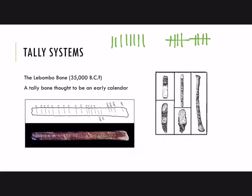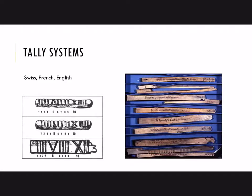An early example of a tally stick is the Labombo bone. One estimate is that it's from 35,000 BC, though that may or may not be accurate depending on the perspective. It's a very old bone thought to be an early calendar, where notches were used to mark off days, weeks, or months. We can also see examples of tally sticks in more modern cultures — Swiss shepherds used tally sticks to count their sheep, and you can see similarities with the Roman numeration system in the markings.